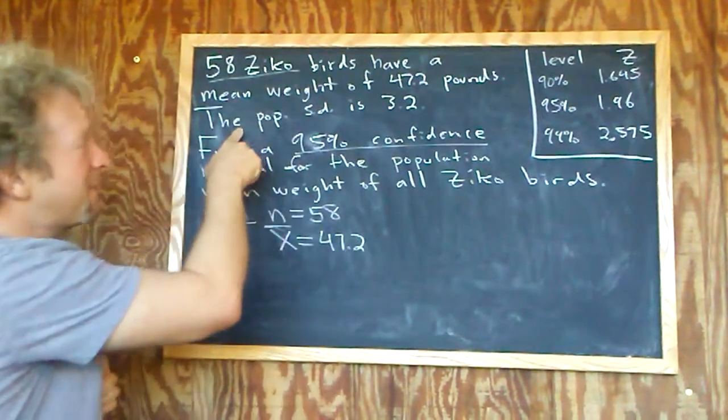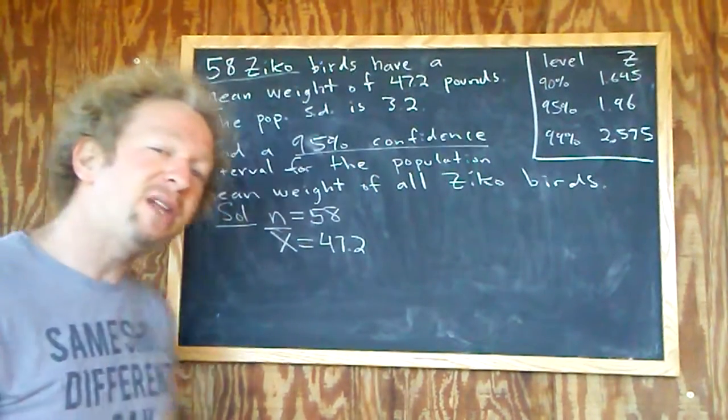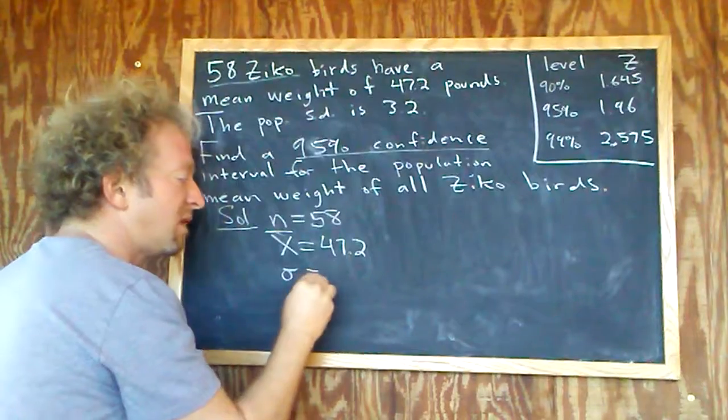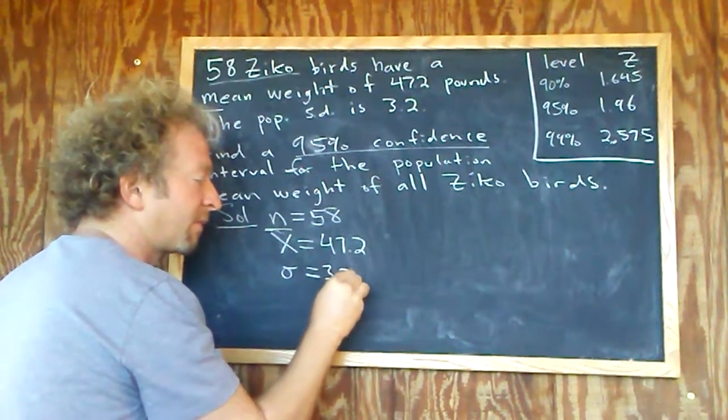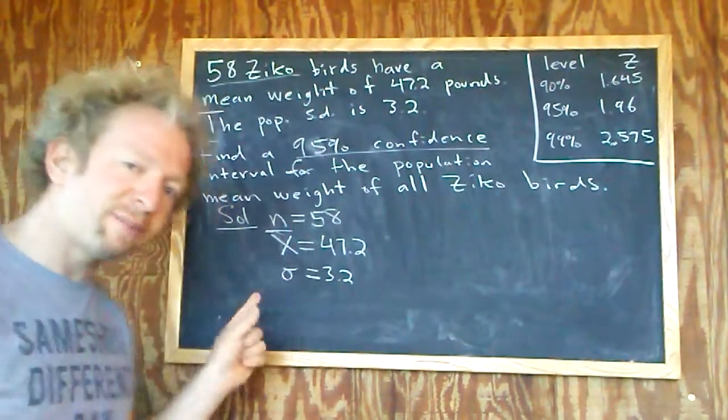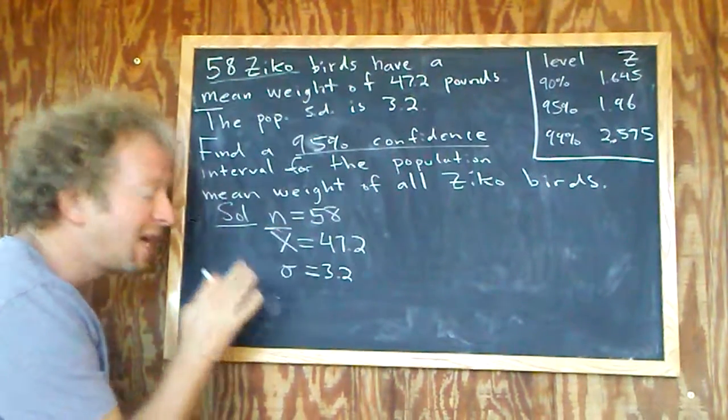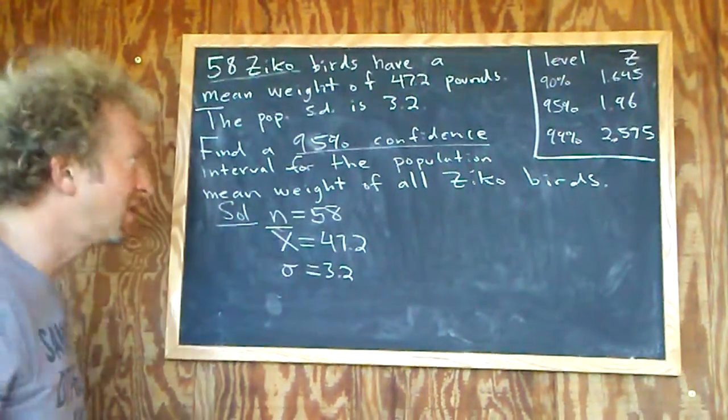Here we have the population standard deviation, so the population standard deviation is sigma. Sigma equals 3.2. If it was the sample standard deviation it would be lowercase s, but sigma is the population standard deviation.